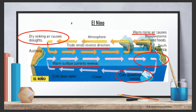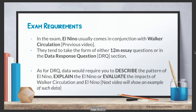The effects are simply the opposite compared to Walker Circulation. The key idea is that the trade winds reverse direction: originally easterly trade winds blow from east to west, but during El Niño they reverse and blow from west to east. It's very straightforward.